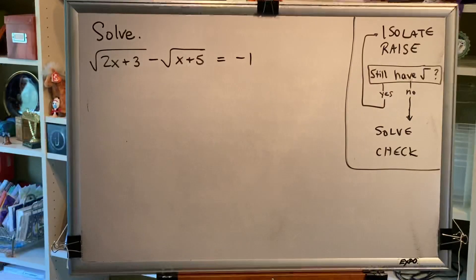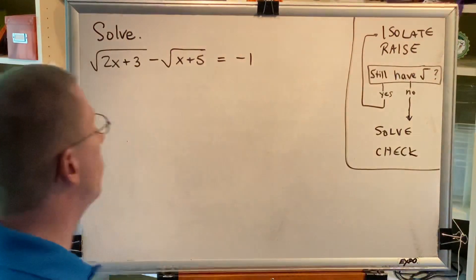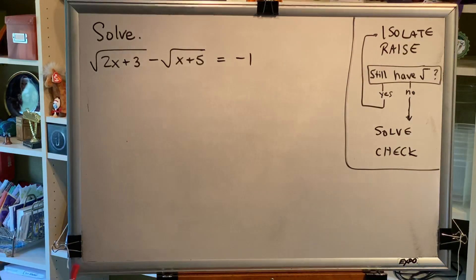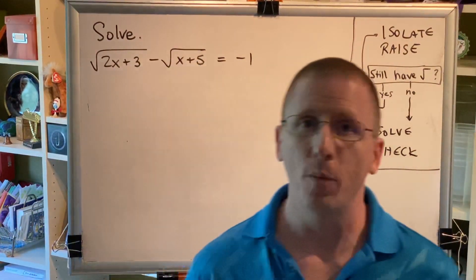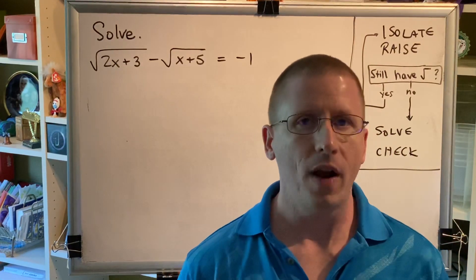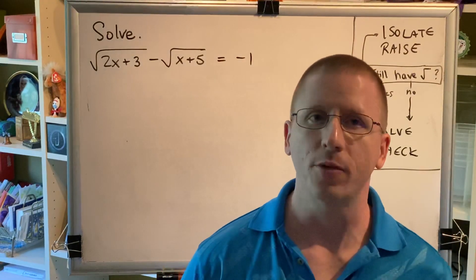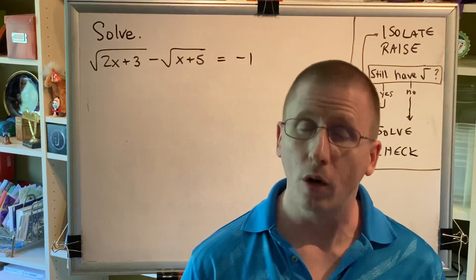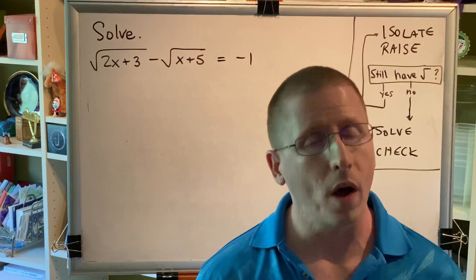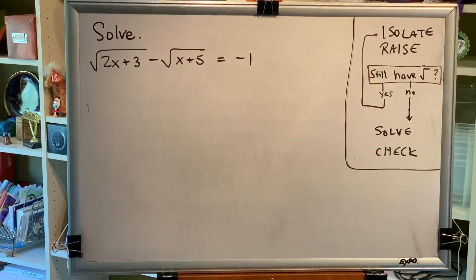So let's go through the steps for this problem. First, isolate. This is the first time we've had to make a choice because there are two radicals in our equation — we have to choose one of them to isolate. If you pick the first one and follow all of the steps correctly, you'll get the correct answer. If you choose the second one and follow all of the steps correctly, you'll also get the correct answer. But the algebra in both solutions will look very different, and one of them is going to be easier than the other. So let's make some smart choices right off the bat.